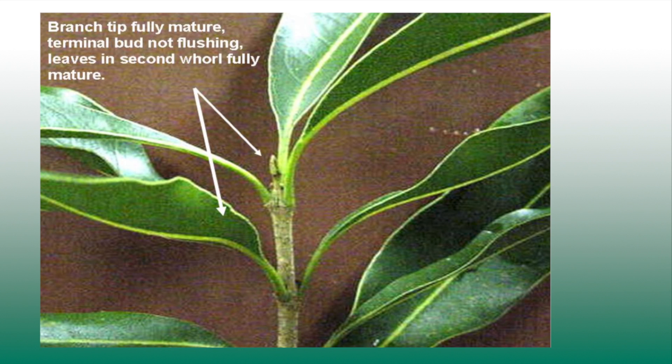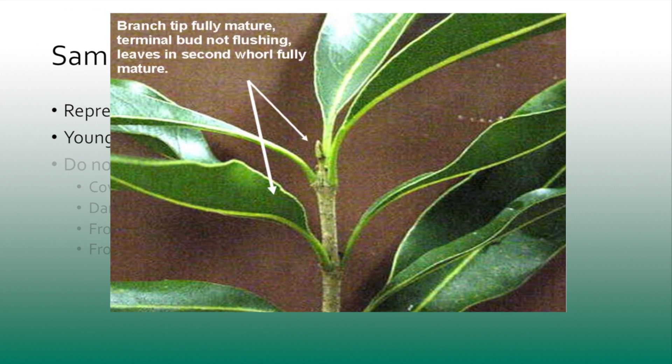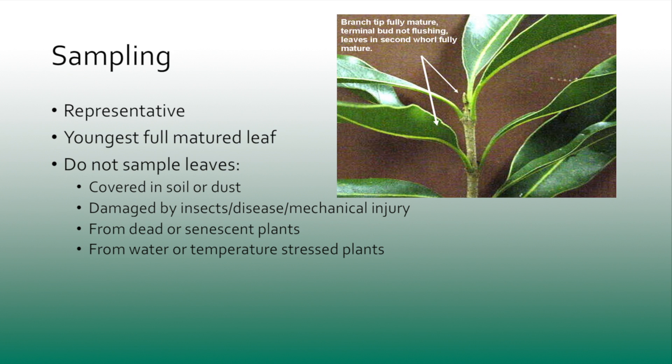Some other important things to think about when collecting the sample: make sure you're not collecting leaves that are covered in soil or dust, because that'll alter your results. Make sure you're not taking from leaves that are damaged in any way, as this could change the nutrient status in those leaves and give you an altered reading. You also want to make sure you're not taking from dead or dying plants because they're not healthy and wouldn't be representative. Typically, unless you're seeing an associated nutrient deficiency problem, dead or dying plants likely aren't due to nutrient issues.